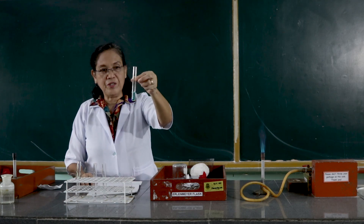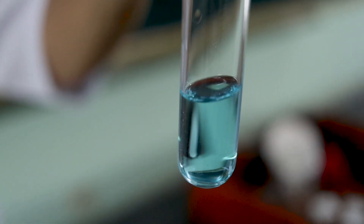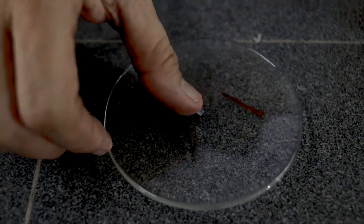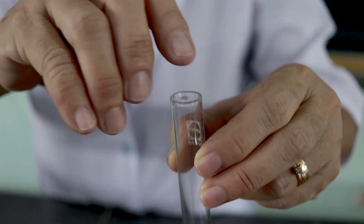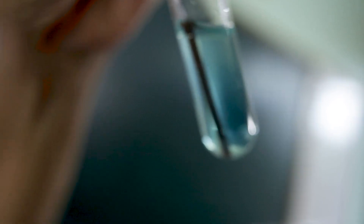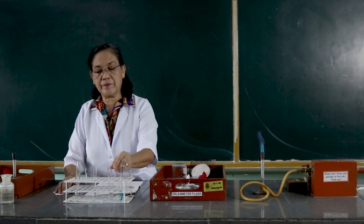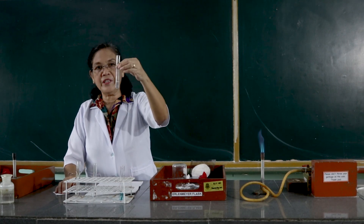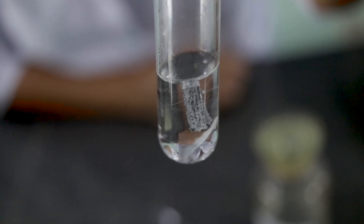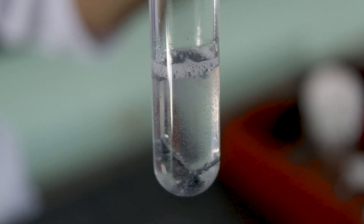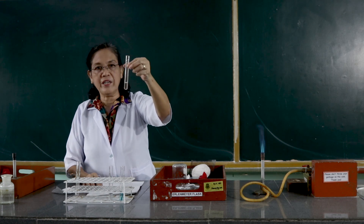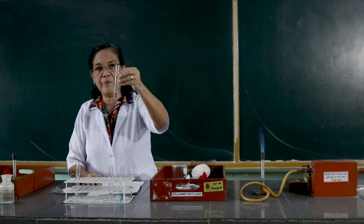To the first test tube containing the copper sulfate, we are going to put here an iron nail. To the second test tube containing the zinc sulfate, we are going to add the magnesium ribbon. To the third test tube containing the silver nitrate, we are going to add a copper wire.